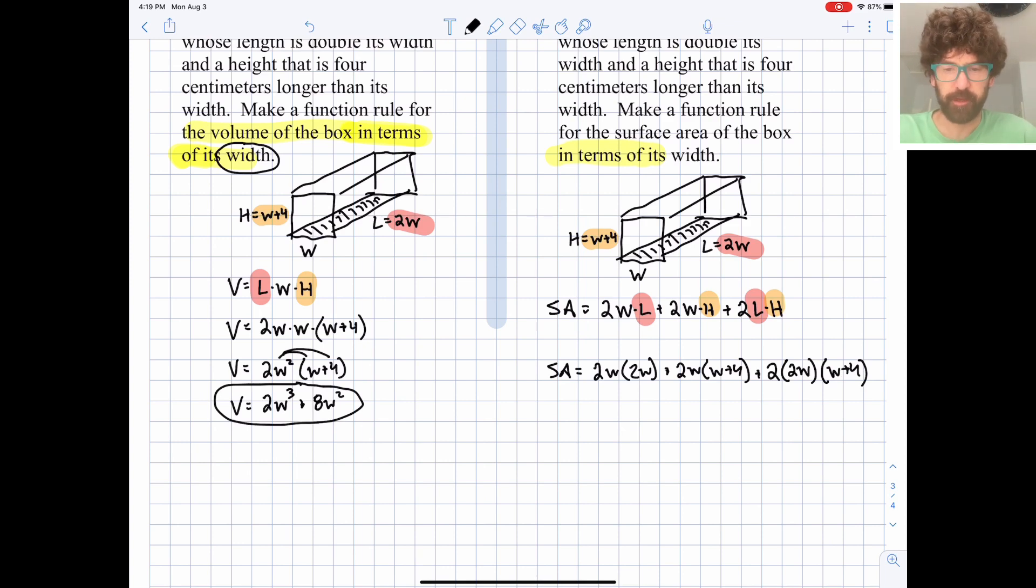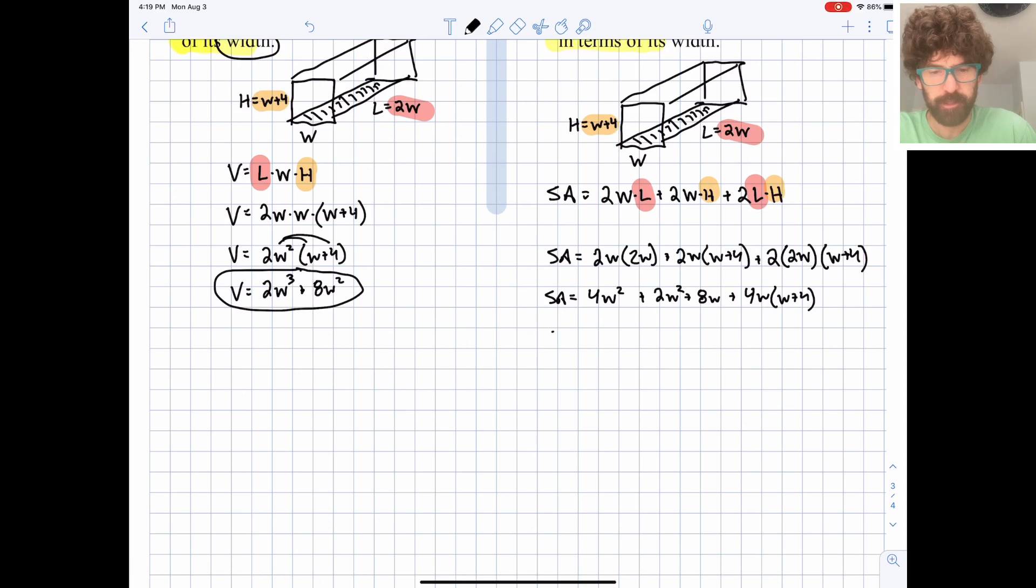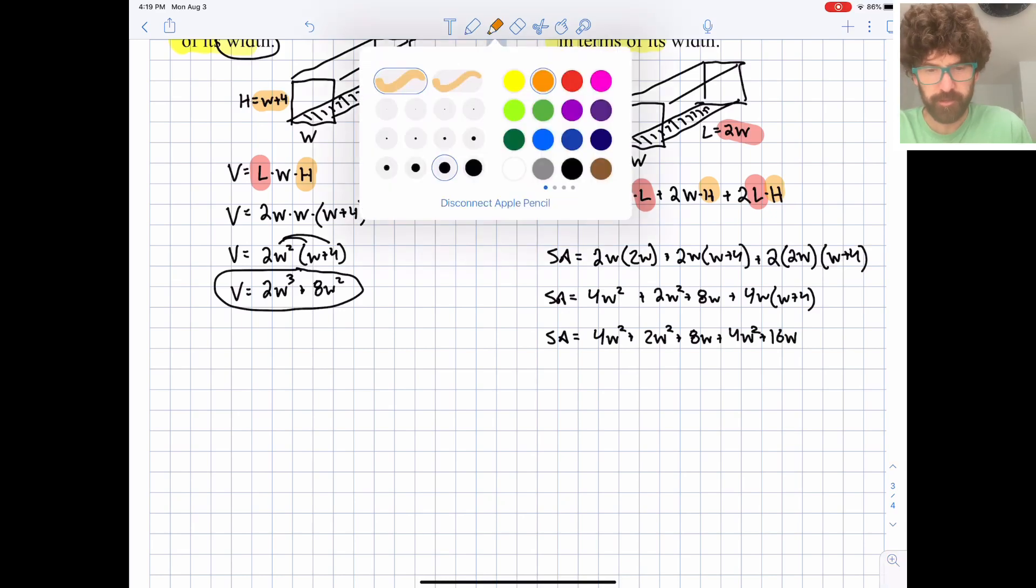We can certainly do a lot of simplifying right here though. So our surface area is going to be 4w squared, plus 2w squared, plus 8w, plus, I'm going to do this in a couple steps, 4w times w plus 4. Okay? So let's do another round of simplifying. 4w squared, plus 2w squared, plus an 8w, plus 4w squared, plus a 16w. And it looks like we have some like terms right now.